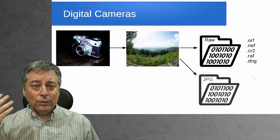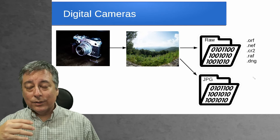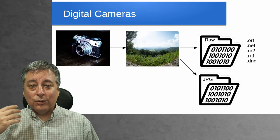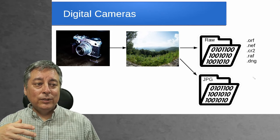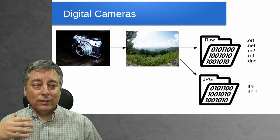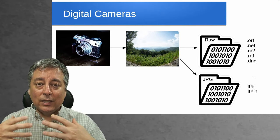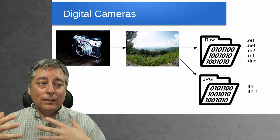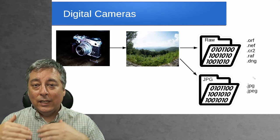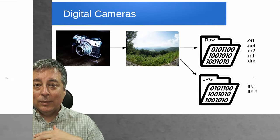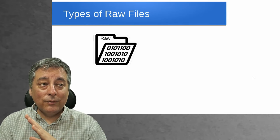You can also create a JPEG image. Sometimes you might shoot RAW only, sometimes JPEG only, but JPEG files end with the extension of .JPG or .JPEG. And this is how you can tell the difference visually between a RAW image and a JPEG image. So now we can talk a little bit about the different kinds of RAW files.